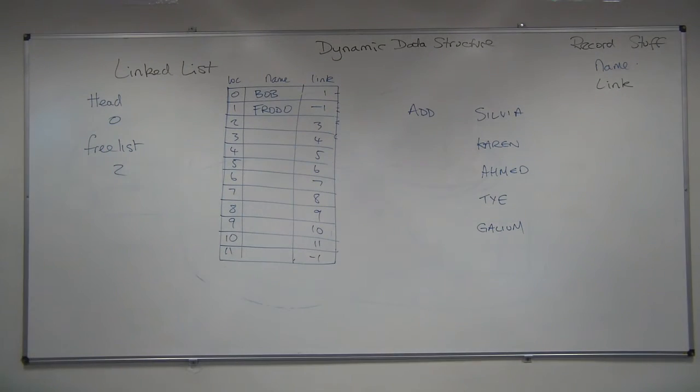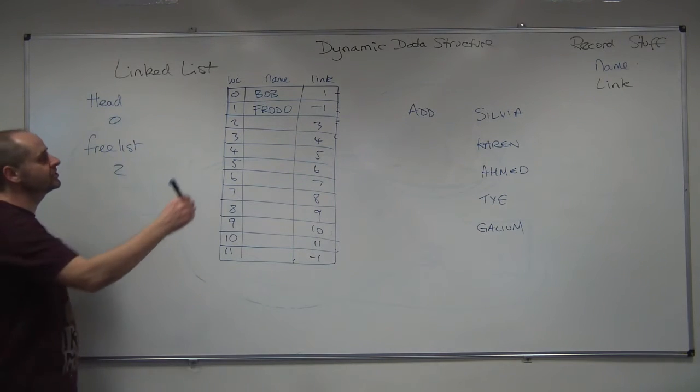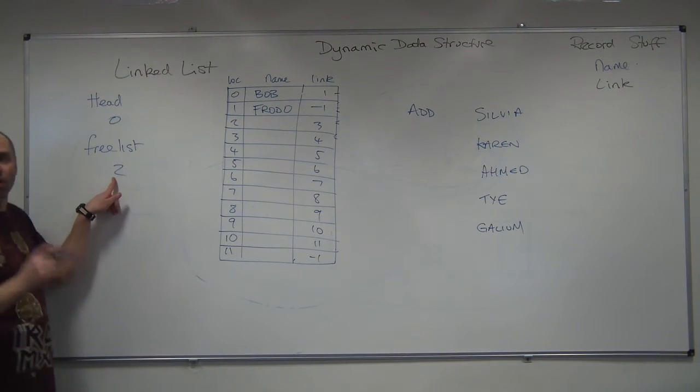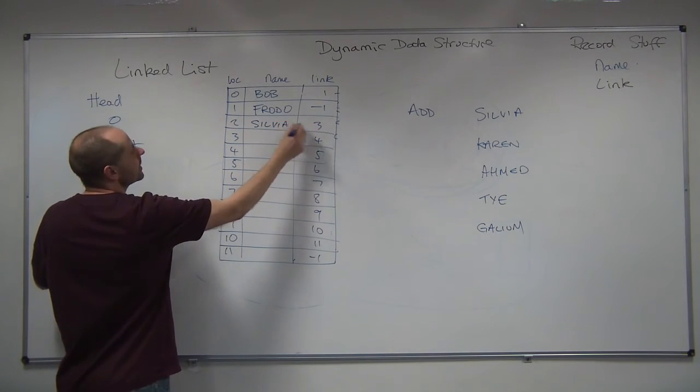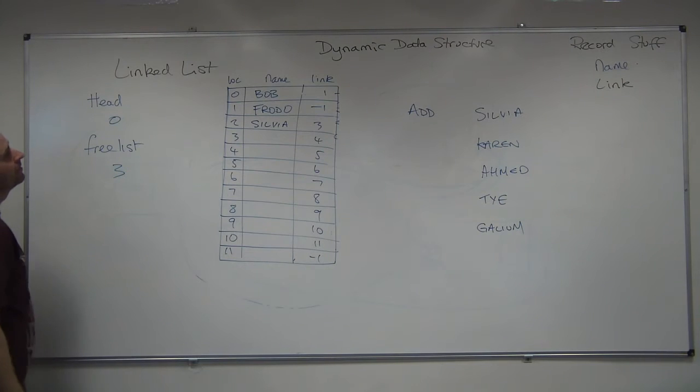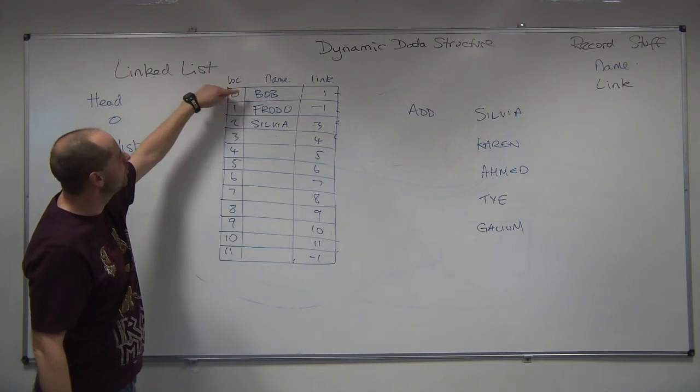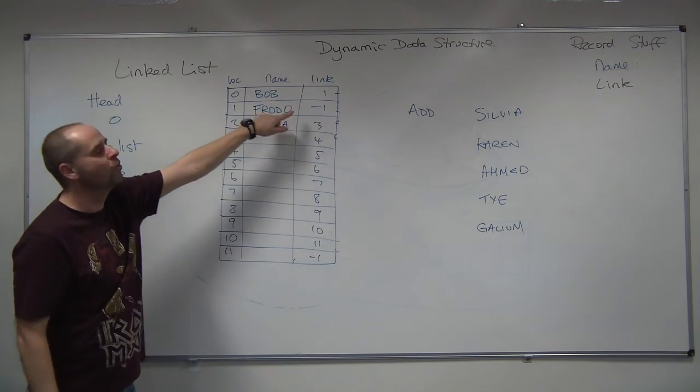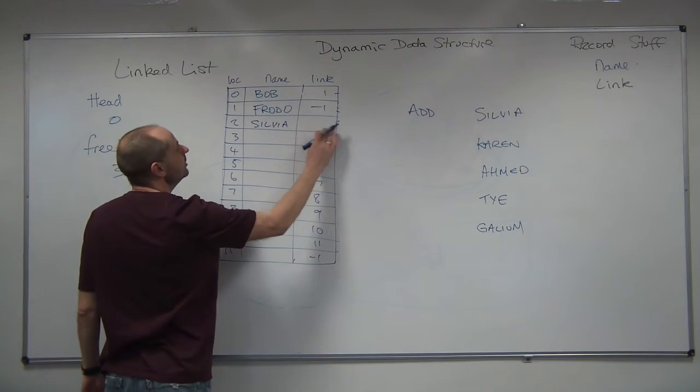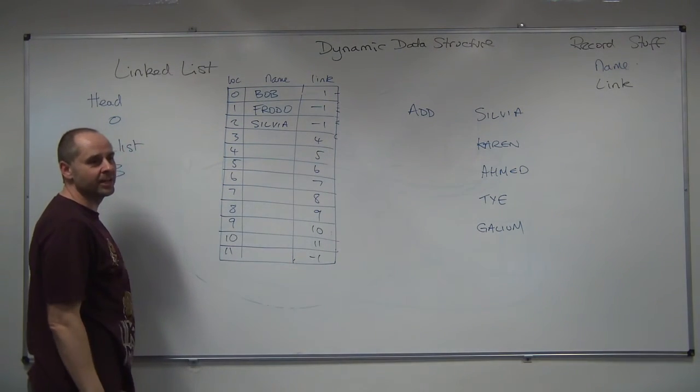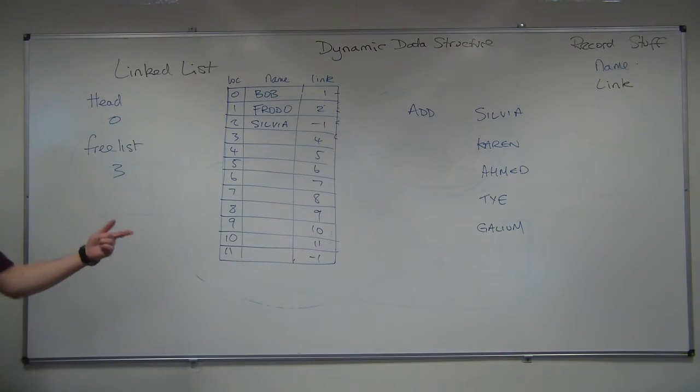I'm going to quickly build this. So my first one is Sylvia. So all I do to start with, whack it in the free space. So Sylvia, adjust the free space pointer. Now I've got to search to find out where Sylvia goes. Start at the head. Bob. After Bob, we go to one, which is Frodo. Frodo's at the end. Sylvia's going to come after. So change Sylvia's link to the null and change Frodo's link to Sylvia.